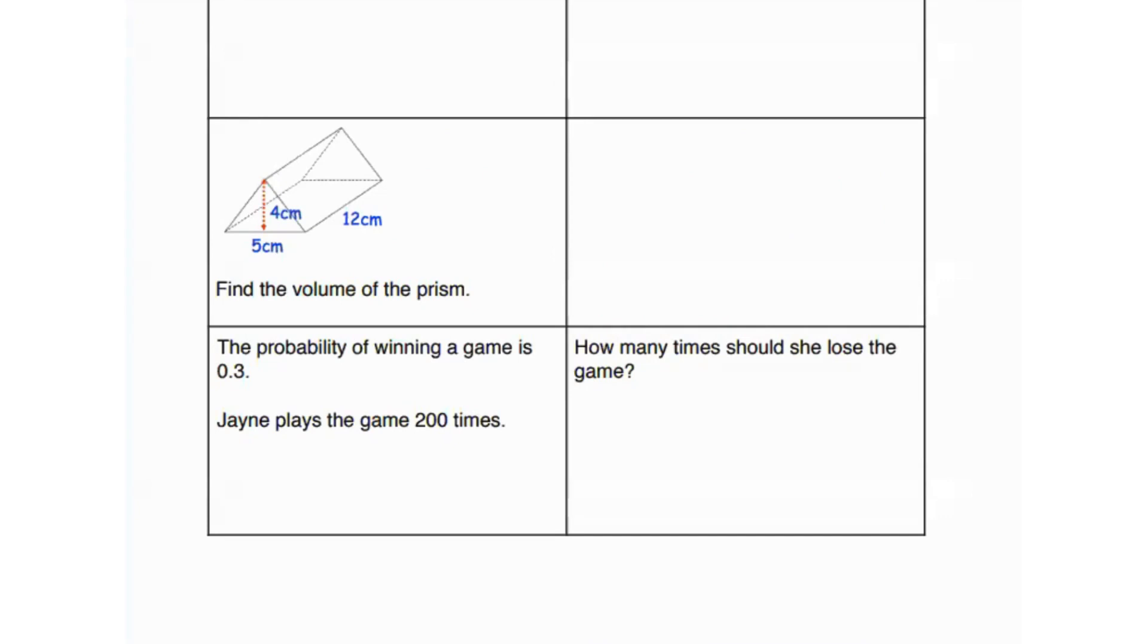Then since the probability of winning a game is 0.3, Jane plays the game 200 times. How many times should she lose the game? So if the probability of winning is 0.3, probability of losing is going to be one minus 0.3, which is going to be 0.7. Always remember that the probability of all events happening in a scenario is going to equal to one. So if they've given us the probability of winning something, the probability of losing in that scenario would be one minus the probability of winning. So hence we have 0.7.